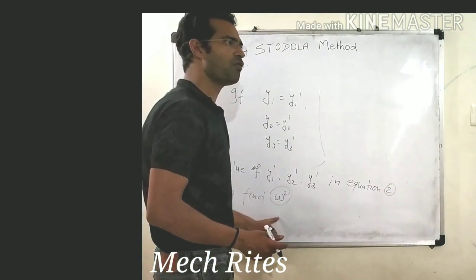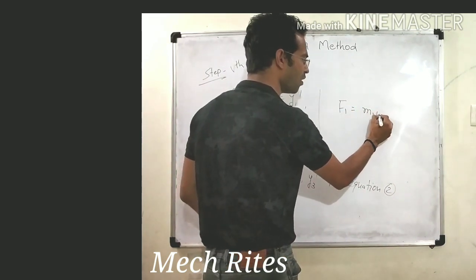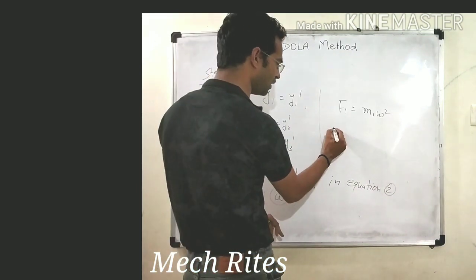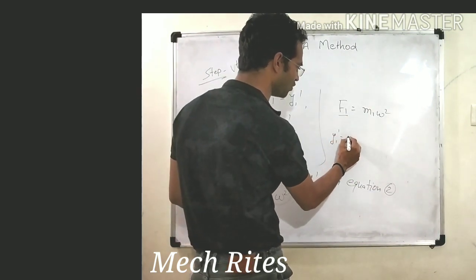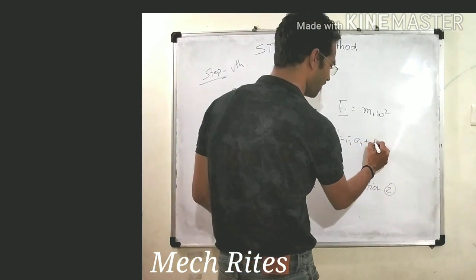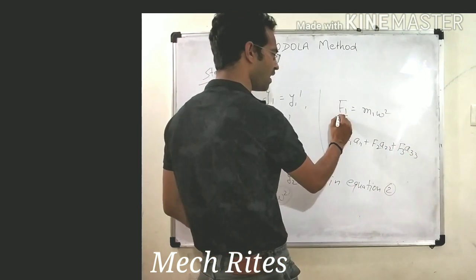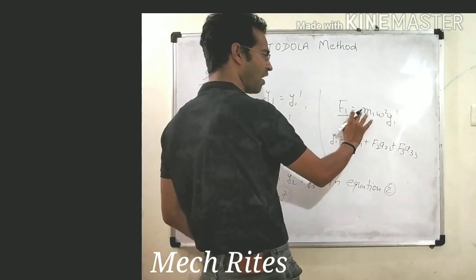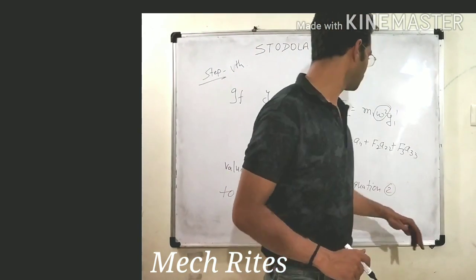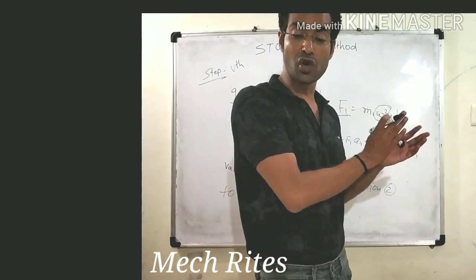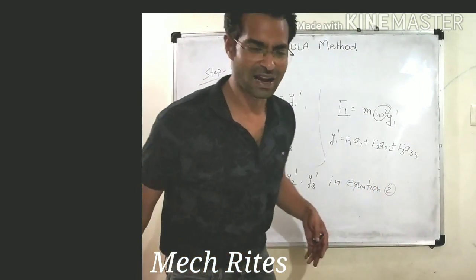After finding the value of ω², we know that F1 equals m1·ω². To find ω², we use y1' equals F1·a11 plus F2·a12 plus F3·a13, and substituting the value of F1 into this equation, we can find the value of ω². If the values are not equal to y, then we will repeat the same process — the iteration is repeated again and again until convergence.